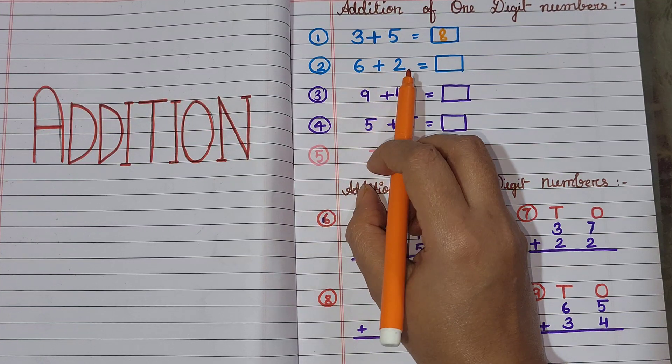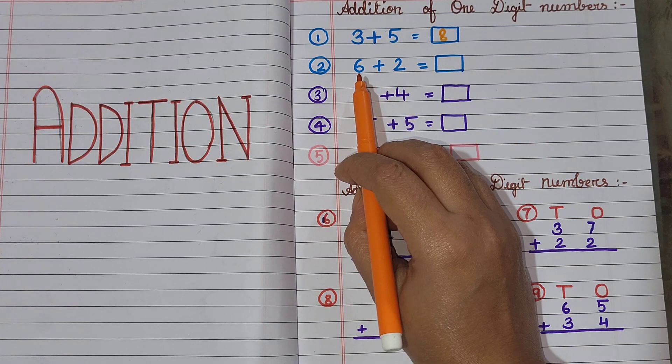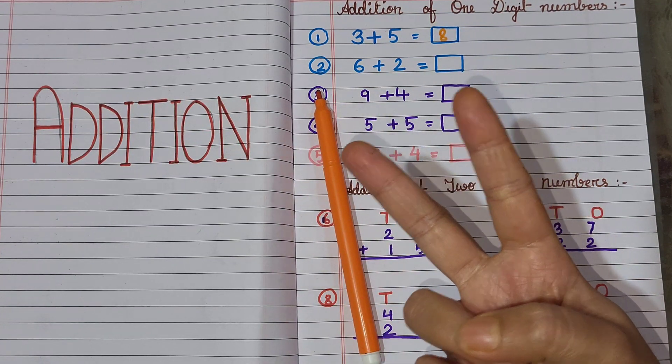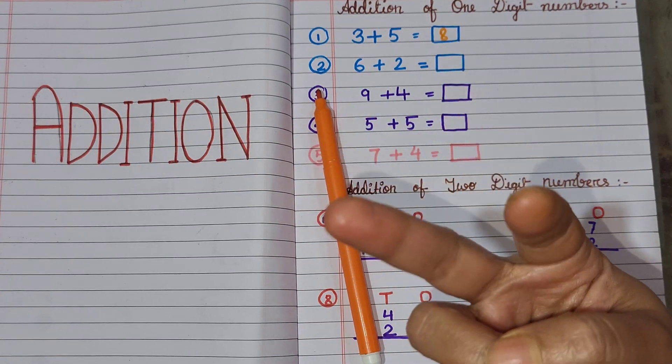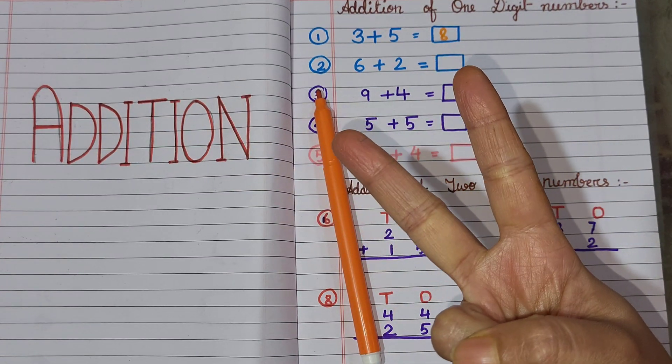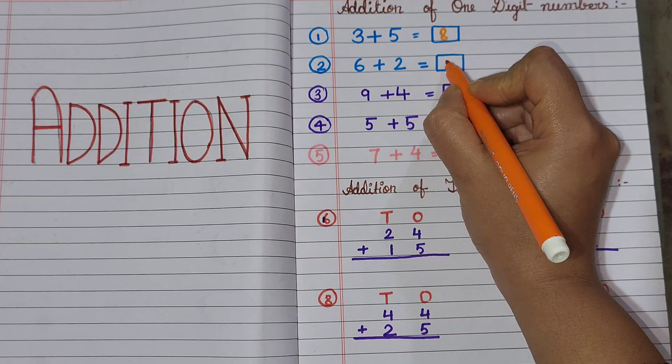Next, 6 plus 2. 6 in my mind, 2 fingers up. 6 ke baad konsa number ayega? 7, then 8. 6 plus 2 equals 8.